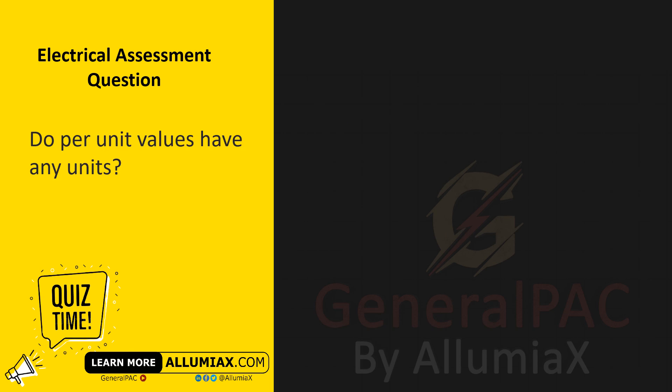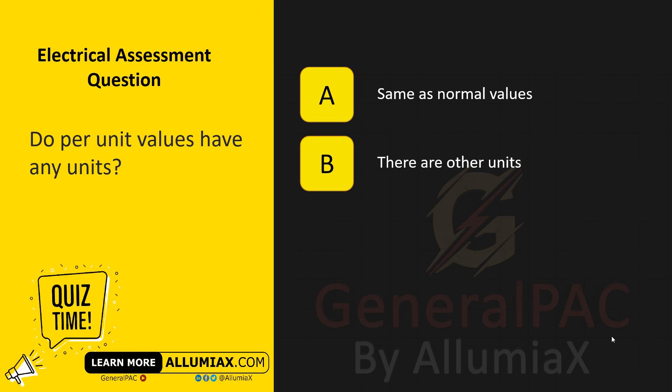Do per-unit values have any units? A. Same as normal values. B. There are other units. C. No units.